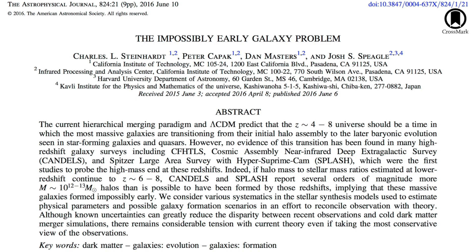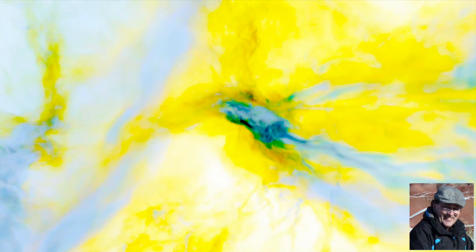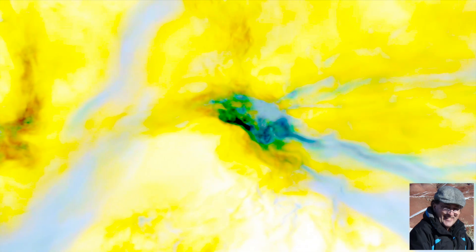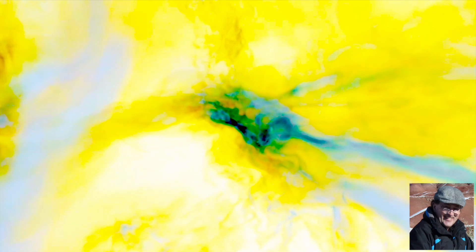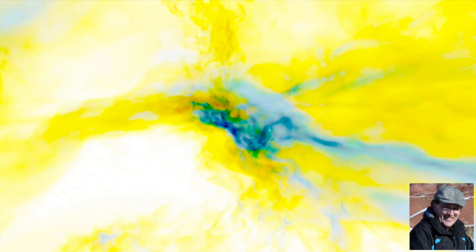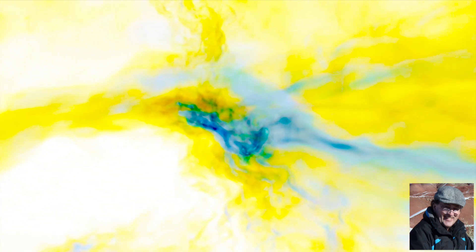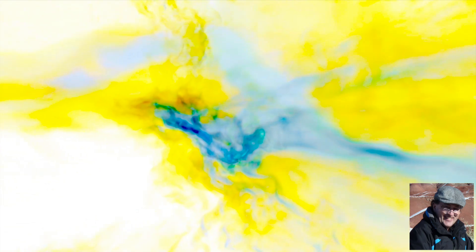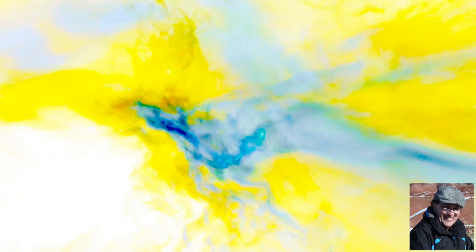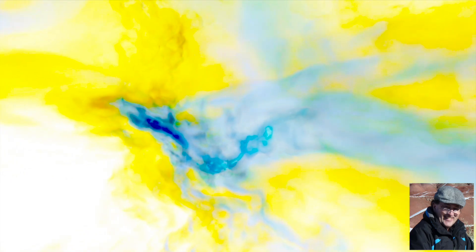This problem with the too early appearance of galaxies actually goes back a couple of years. There were already hints of major issues with the standard model. Basically, in a nutshell, in the standard model of cosmology there's a very firm prediction of what the timeline has been since the big bang in terms of how much time has elapsed for a given redshift.